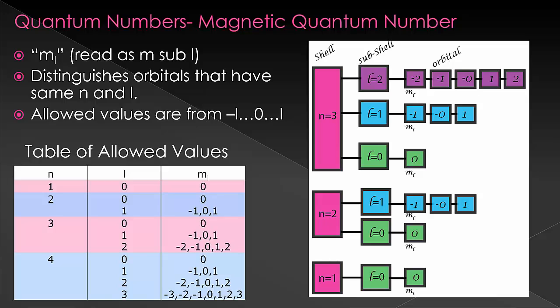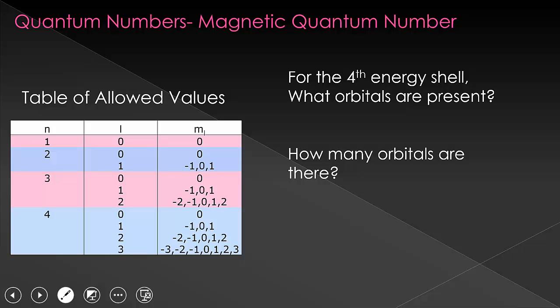Remember that each L value within an energy shell has its own M sub L values, just like in our analogy each room number would have its own set of lettered rows. So if we look at energy level three, we have three L values, and because of that we have three different allowed sets of M sub L. The D orbitals are allowed to have negative two up to two. The P orbitals are allowed negative one to one. And the S orbital is just allowed zero. Now let's extend our question about the fourth energy shell further: how many orbitals are there in the fourth energy shell?